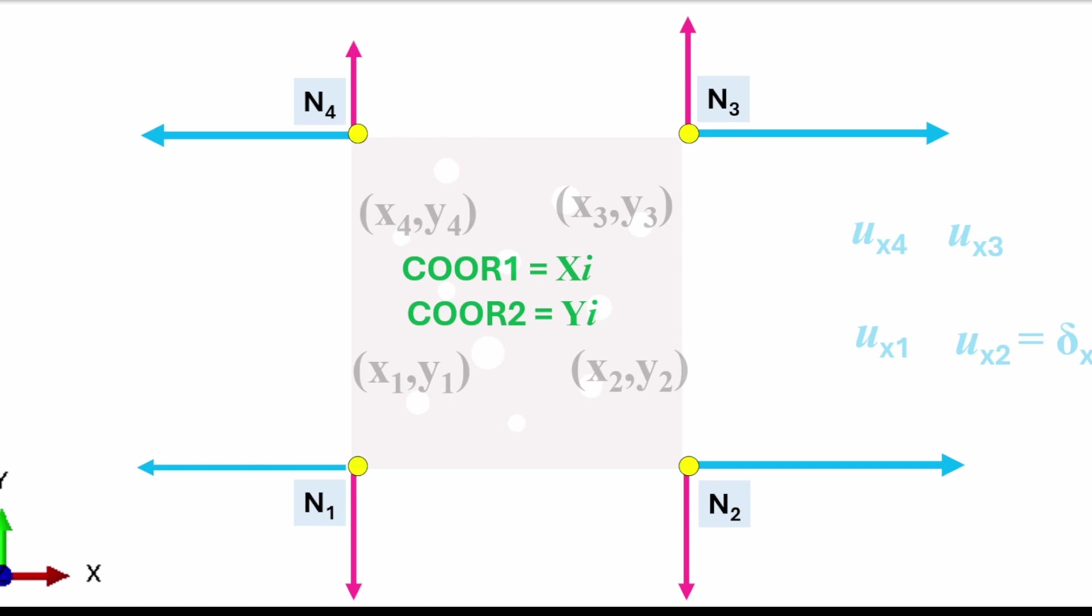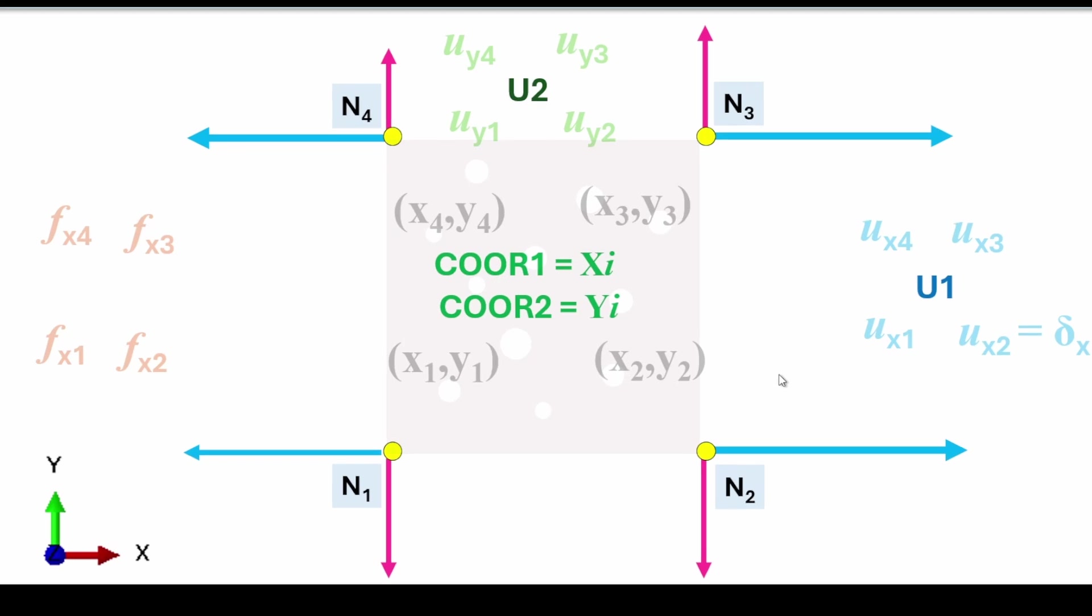All the displacements for the four nodes in the x direction I'll also note and call u1. I'll ask for displacement in the one axis from my model. Same in the y direction, I'll call that u2. Then the reaction forces: in the x-axis I've got rf1, and reaction forces rf2. When setting up the model, I need to ask the simulation to give me all these things.